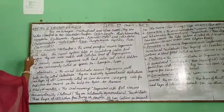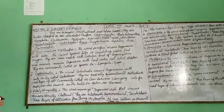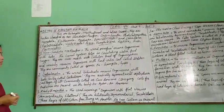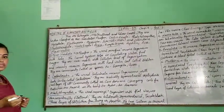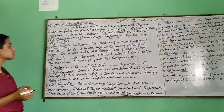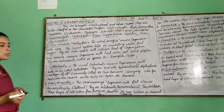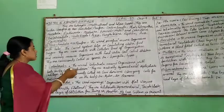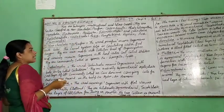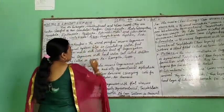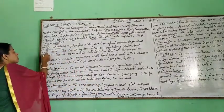First, non-chordates. Non-chordates are animals that do not have a backbone. First phylum is Porifera. Porifera is just like spongy. The word Porifera means organism with pores.